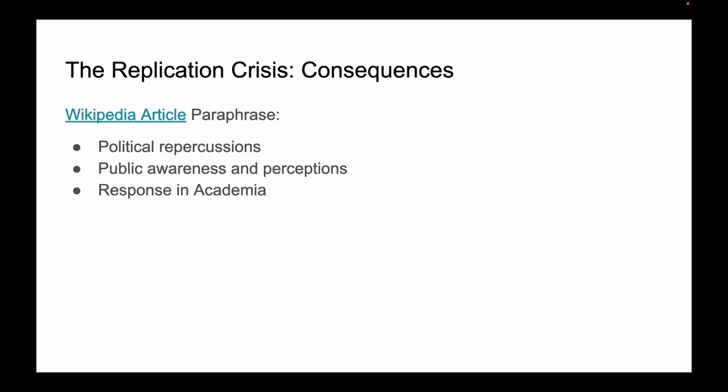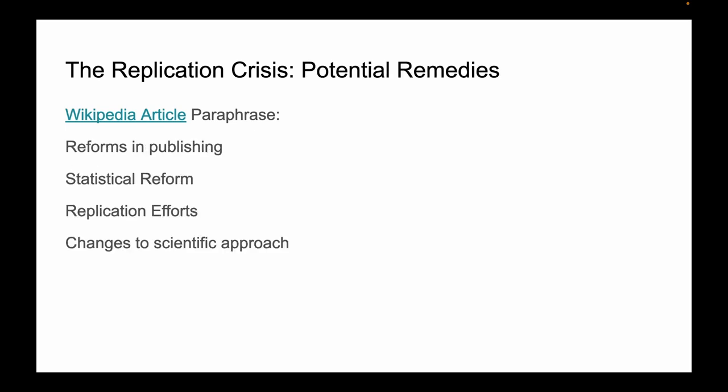According to this Wikipedia page there are four major buckets for potential remedies. The first bucket is reforms in publishing. Remedies include meta-science, which is the study of science itself, presentation of methodology not just the results, results-blind peer reviews, and pre-registration of studies.